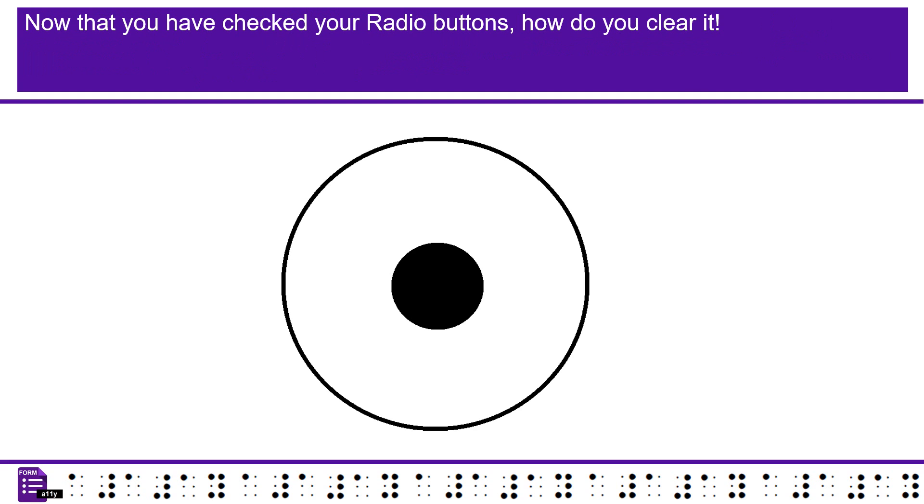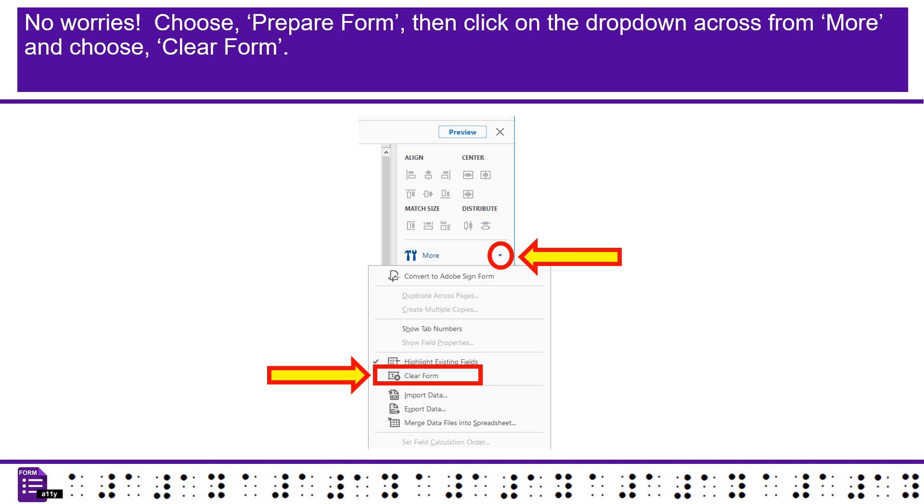Now that you have checked your radio buttons, how do you clear it? No worries. Choose Prepare Form, then click on the drop-down across from More, and choose Clear Form.